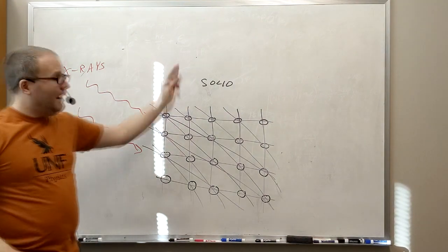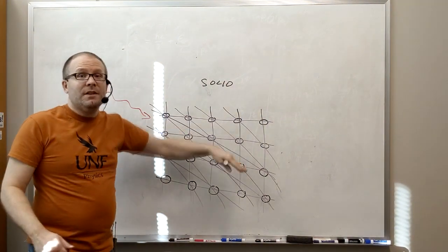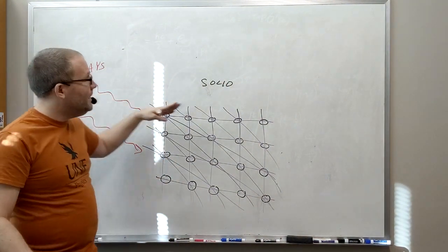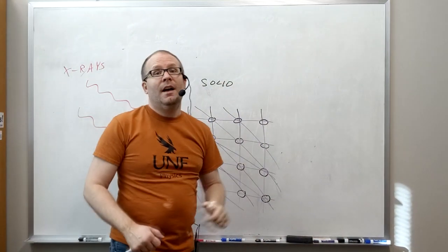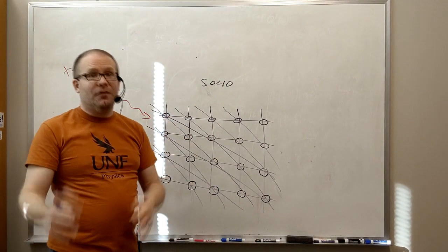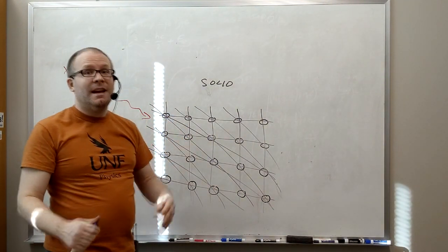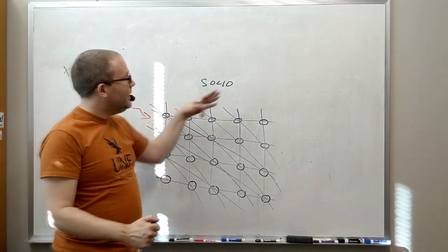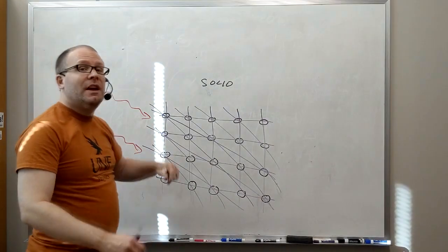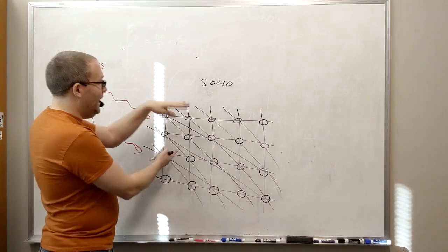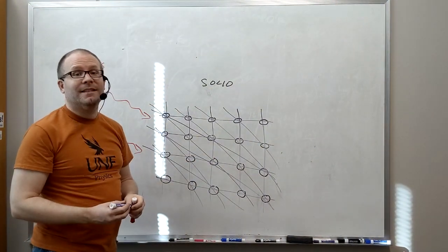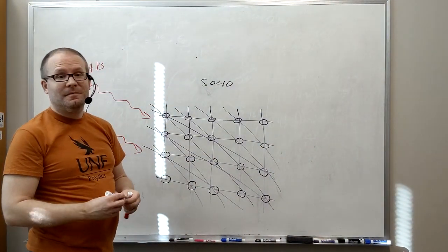So for each possible plane — each of these infinite possible planes — you're going to get a pattern of bright and dark interference spots. And by looking at those interference patterns, you can actually tell what kind of structure the solid has inside.